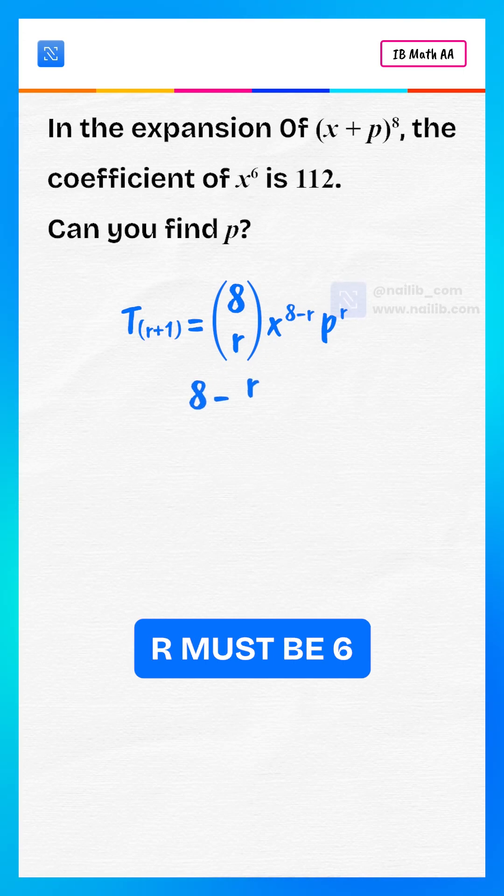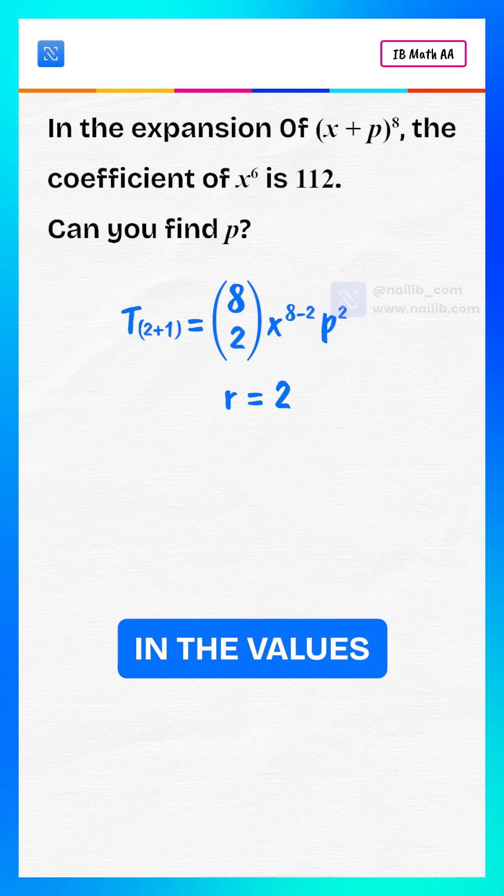8 minus r must be 6. That means r equals 2. Now plug in the values.